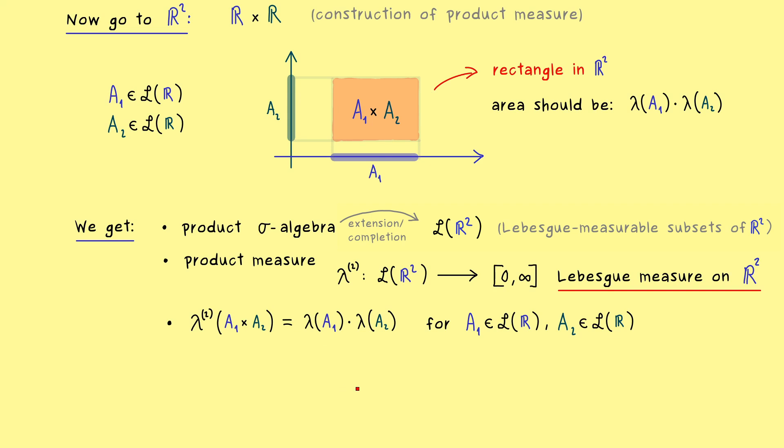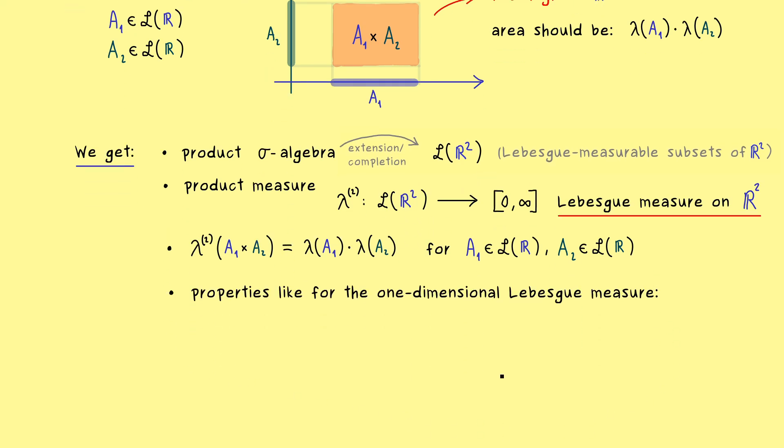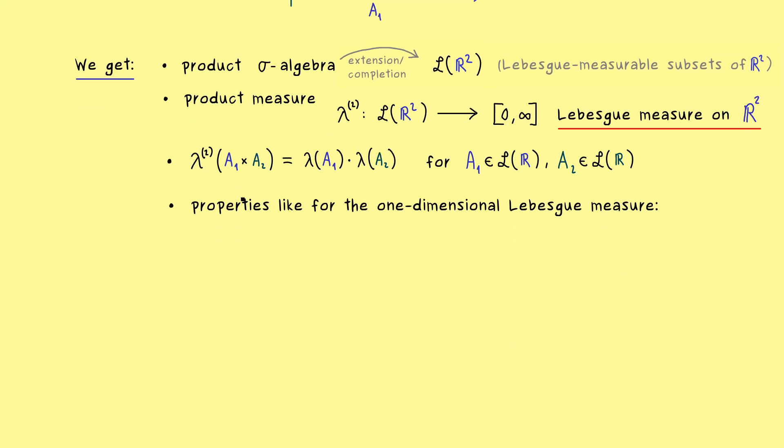And again, I should point out, that most subsets in R2 are not of this form. But the result is, that the two-dimensional Lebesgue measure still gives an area for these subsets. And moreover, all the nice properties we discussed for the one-dimensional Lebesgue measure still hold for this area function in R2.